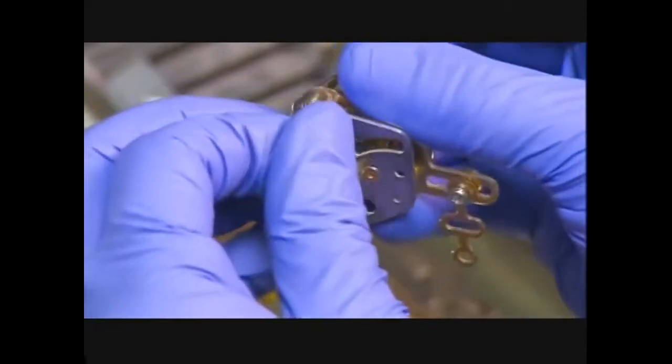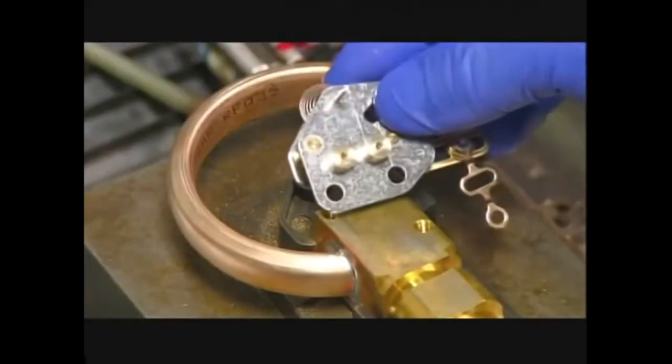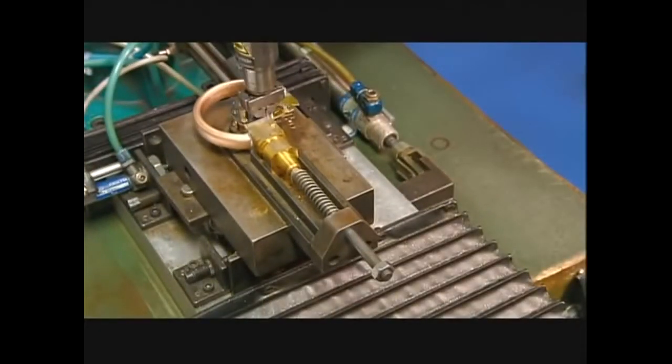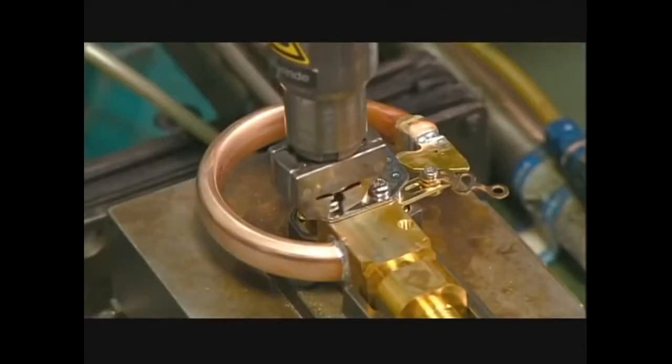Another worker takes a gear mechanism, which controls the mechanical movement inside the gauge, and places it on the connector. A machine screws the gear mechanism in place.